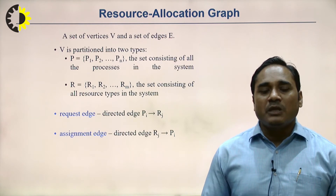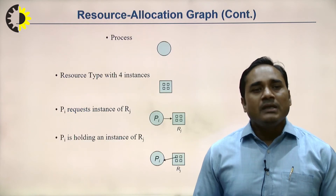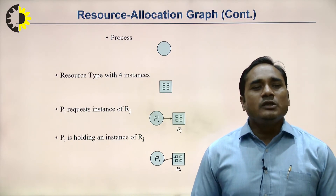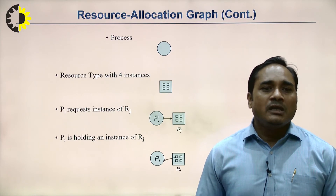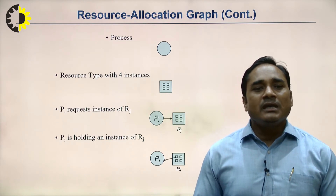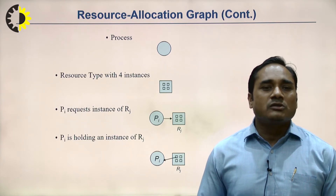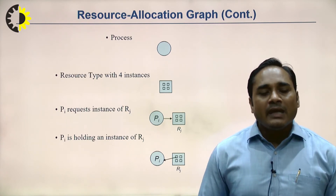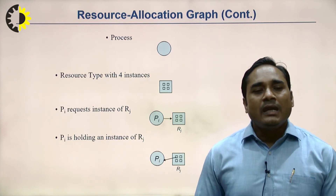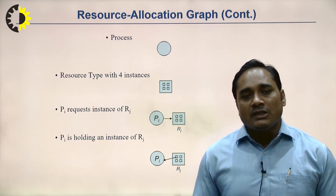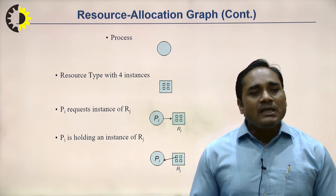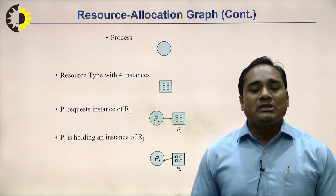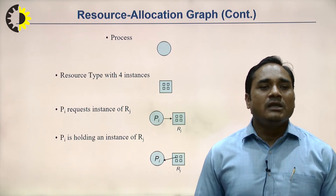In the resource allocation graph, processes are represented by circles and resource types by square boxes. Instances of a resource are shown as small dots inside the square box. A request edge shows Pi requesting Rj, while an assignment edge shows Pi holding resource Rj. These two edge types are distinct in the graphical representation.